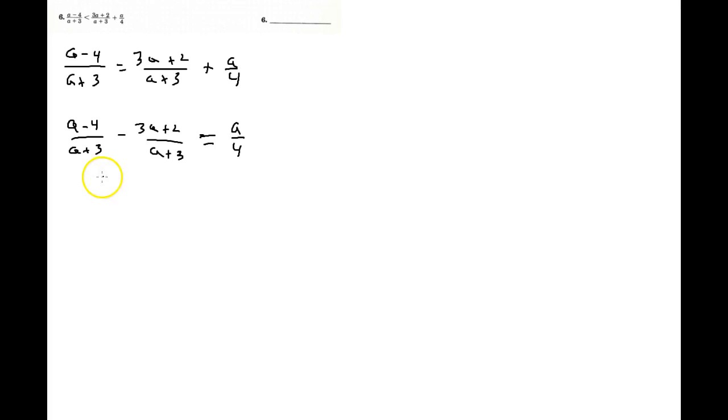Okay, so now I've got a common denominator, I can add the tops. If I add the tops, I'm going to get (negative 2a minus 2) over (a plus 3) equals (a over 4).